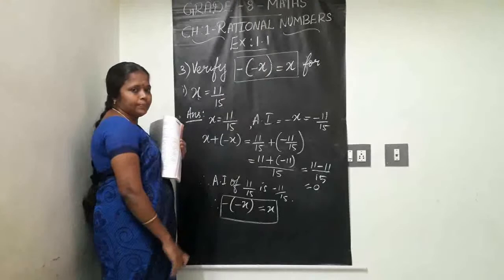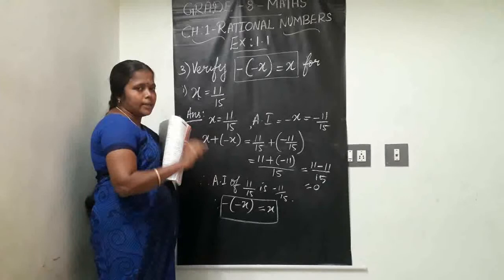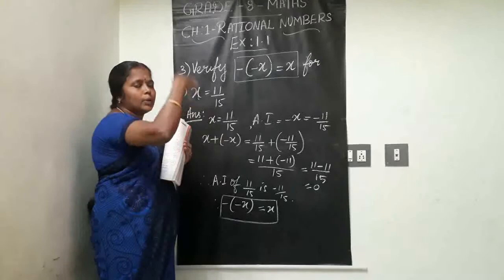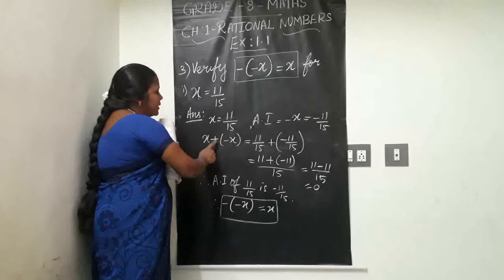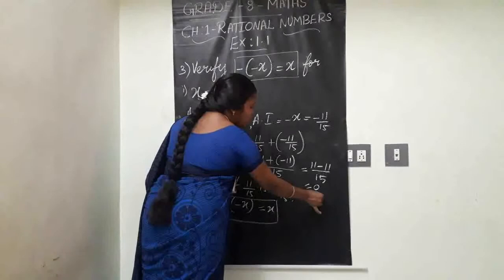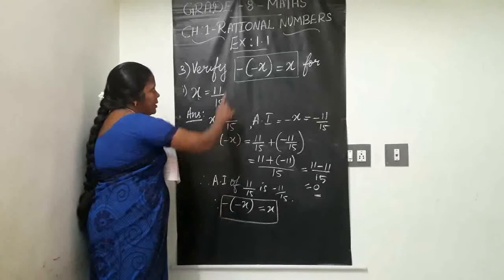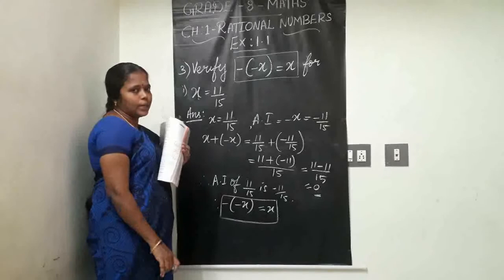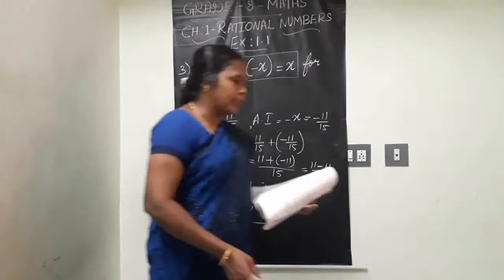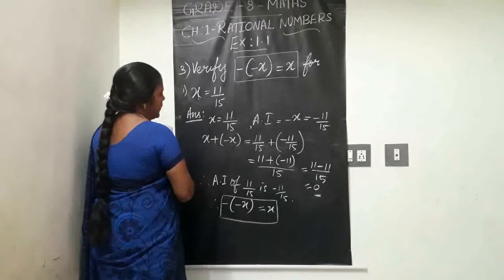So to summarize: to get the additive inverse of any rational number, multiply that number by minus 1. Again, if you multiply that additive inverse by minus 1, you get the original number. To verify: add the given number with its additive inverse; the answer must be zero. Copy this neatly in your classwork note.